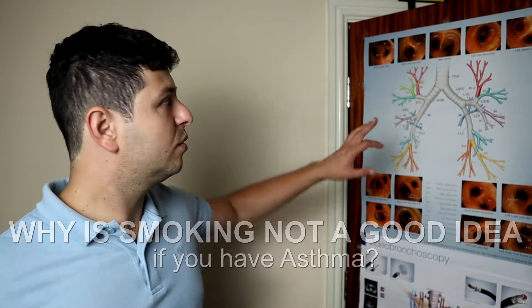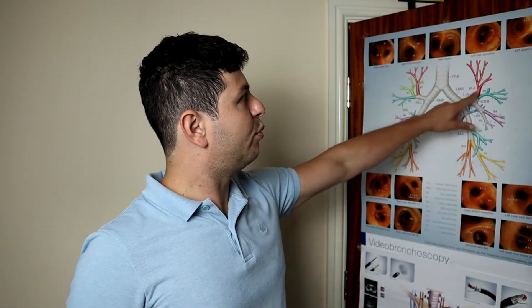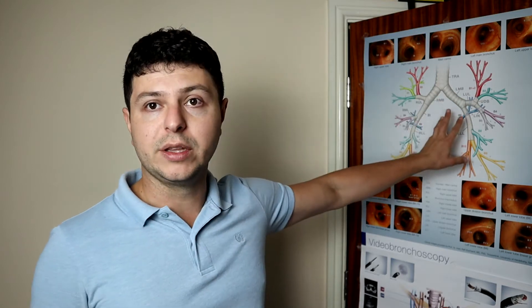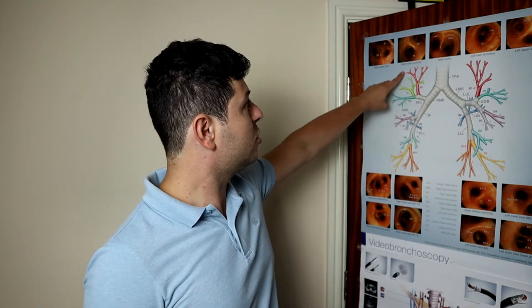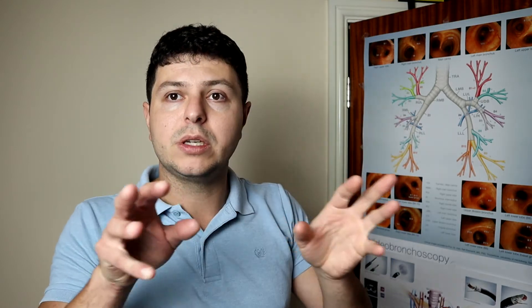I'd like to turn your attention to this schematic of airways that branch out. This is basically what's going on in the lungs. Now, if you reach the edge, basically, of the lung, as these airways become smaller and smaller, they are called bronchioles.